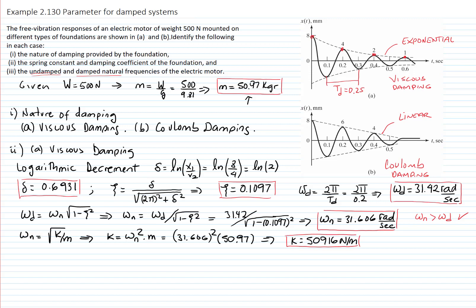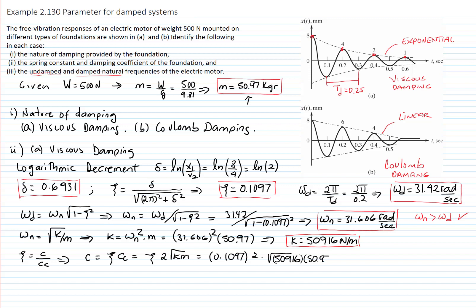That gives k = 51,016 N/m. Now we calculate the damping coefficient. Zeta is defined as the damping coefficient divided by the critical damping coefficient (2√(km)), so the damping coefficient c equals zeta times 2√(km). Substituting 0.1097 × 2√(50.97 × k) gives a damping coefficient of 353.28 N·s/m. We now have all parameters of the system extracted from the experimental response curve.